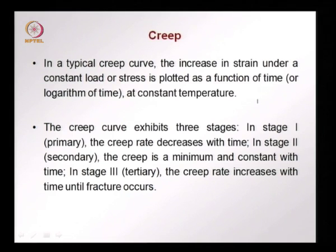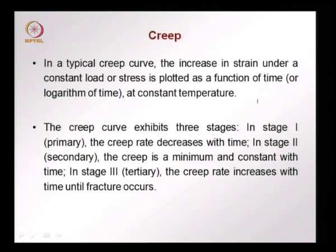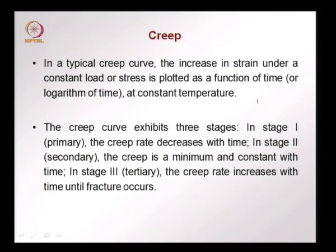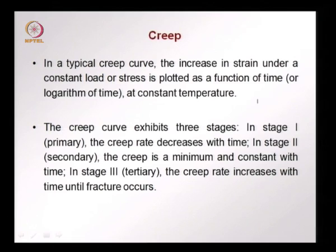In a typical creep curve, three stages can be identified. In the primary stage, the creep rate decreases with time. In the secondary stage, which is the longer stage, creep is minimum and increases at a constant rate — the slope is almost constant. In the tertiary stage, the creep rate increases rapidly with time until we have sudden failure or fracture.